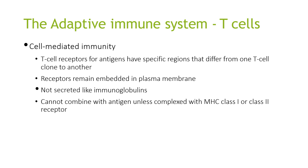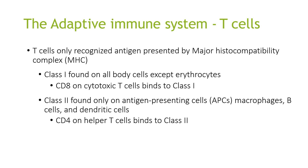T cells are involved in cell-mediated immunity. T cell receptors for antigens have specific regions that differ from one T cell to another. Receptors remain embedded in the plasma membrane and are not secreted immunoglobulins. They cannot combine with antigens unless complexed with MHC class 1 or class 2 receptors. T cells only recognise antigen presented by MHC complexes. MHC class 1 is found on all body cells except red blood cells, and CD8 or cytotoxic T cells bind to class 1. MHC class 2 is found on antigen-presenting cells — macrophages, B cells, and dendritic cells — and CD4 helper T cells bind to class 2.